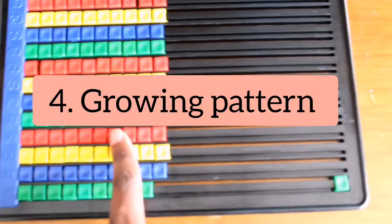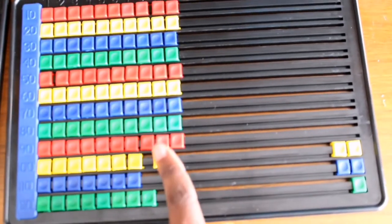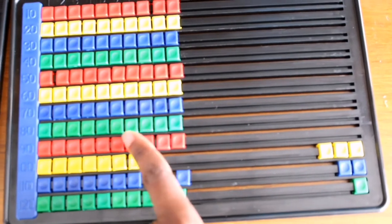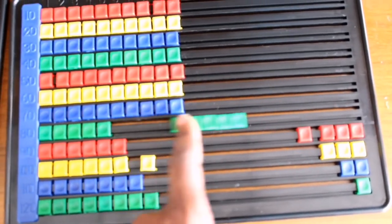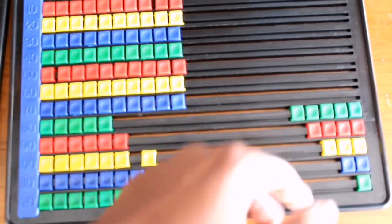To teach the child growing patterns, like one, two, three, three, four, five, and so on.